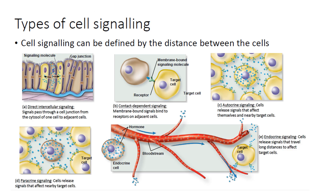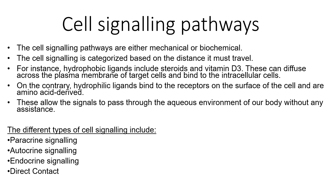Cell signaling can be defined by the distance between cells. You have direct intracellular signaling, contact-dependent signaling, autocrine signaling, paracrine signaling, and endocrine signaling. Cell signaling pathways can be either mechanical or biochemical, categorized based on the distance the signal must travel. For example, hydrophobic ligands, which include steroids and vitamin D3, can move across the plasma membrane via diffusion and bind to intracellular receptors. Hydrophilic ligands bind to receptors on the surface of the cell and are amino acid derived, which permits the signal to pass through the aqueous environment of the body without assistance.